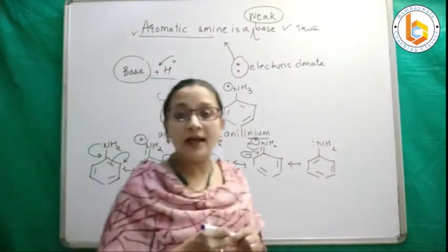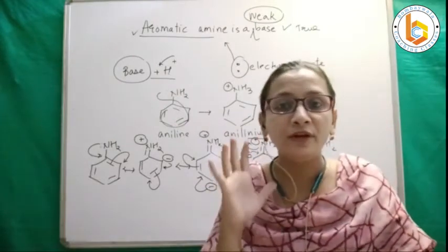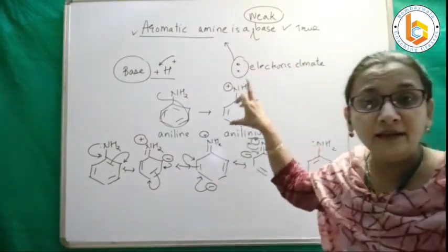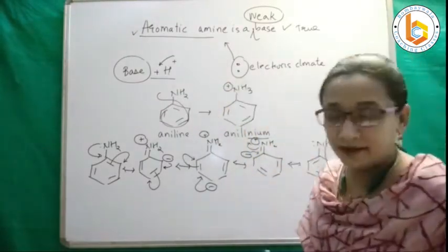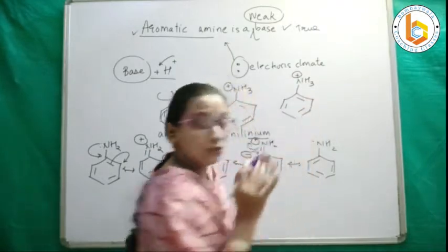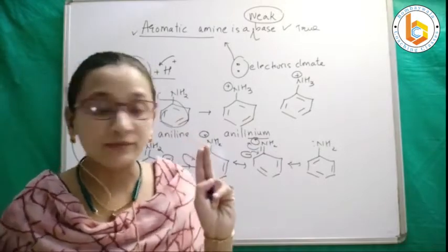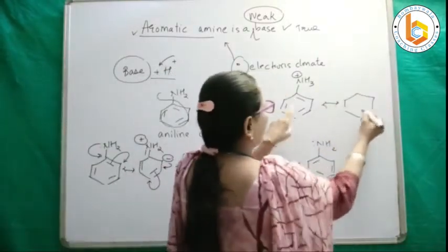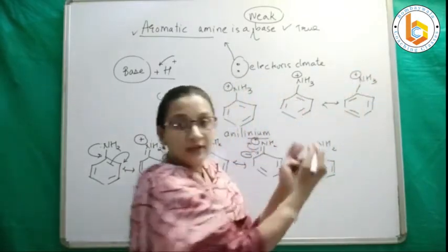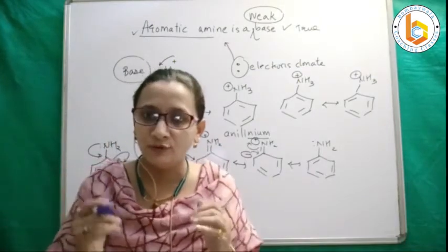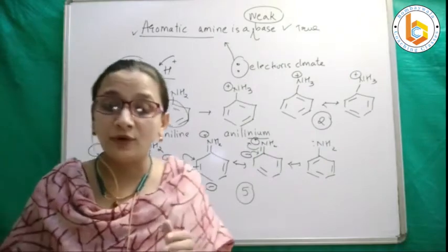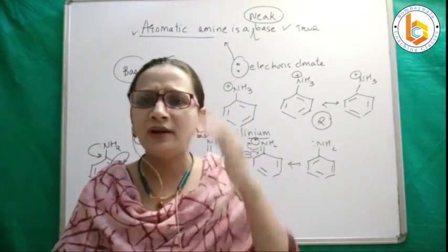So aniline has 5 resonating structures. The more the resonating points, the more the stability, and the more the resonating points, the more the strength. Anilinium ion is typical of resonating points. For example, anilinium ion does not contain a lone pair of electrons because you already have 2 resonating points. So anilinium ion can only show 2 resonating points — as in the Kekulé structures of benzene. Because aniline shows 5 resonating points and anilinium ion shows only 2, aniline is more stable than anilinium ion.